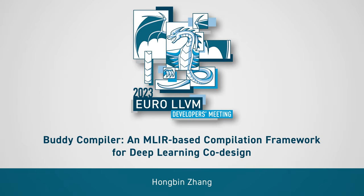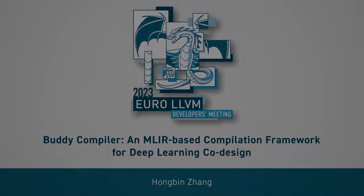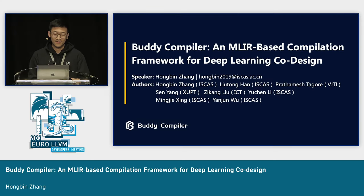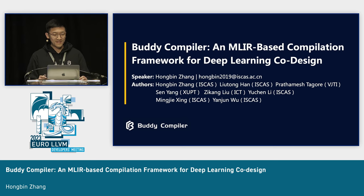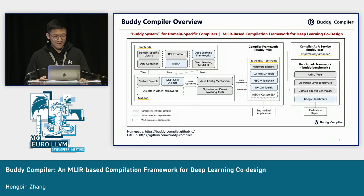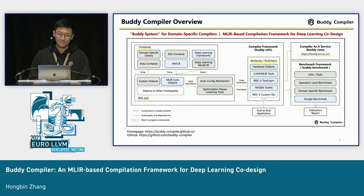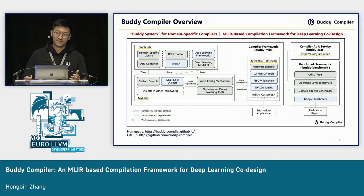Good afternoon everyone, my name is Hongbin. I'm from the Institute of Software, Chinese Academy of Science, and I'm really glad to be here to introduce our work. Our project is called Body Compiler, and we hope to build an MLIR-based compilation framework for deep learning co-design. We use the name 'Body' because we want it to be a body system for domain-specific compilers, and deep learning is a really hot domain currently.